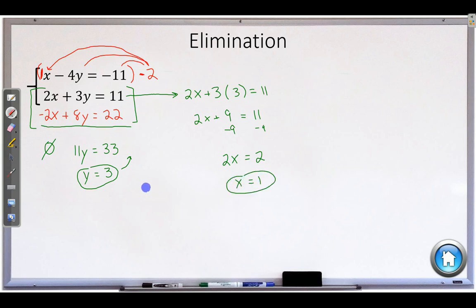So again, we have the point 1, 3. So again, we have two lines that cross somewhere. We don't know where they cross. Well, sorry. We do know where they cross. We just don't know what they look like. They cross at 1, 3.